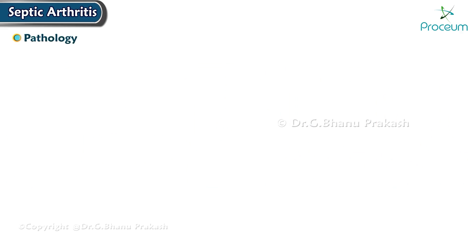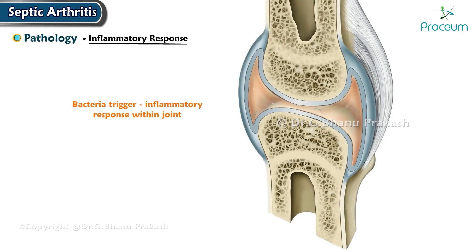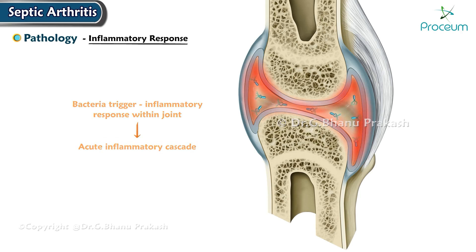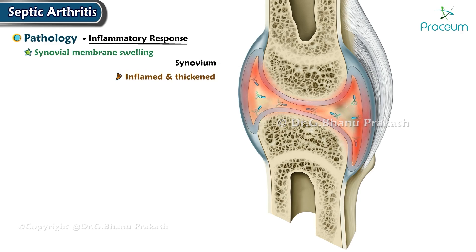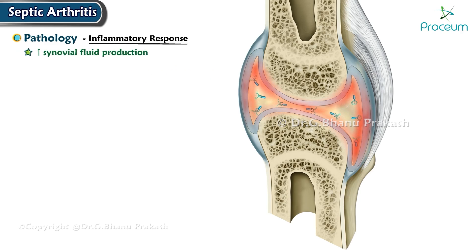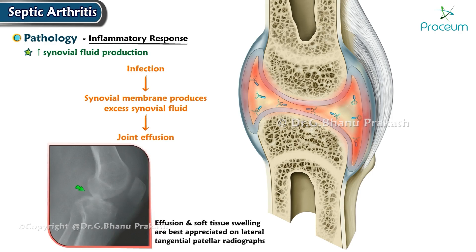In terms of pathology, bacteria trigger an inflammatory response within the joint leading to an acute inflammatory cascade and synovial membrane swelling. The synovium, the inner lining of the joint capsule, becomes inflamed and thickened. In response to infection, the synovial membrane produces excess synovial fluid, leading to joint effusion.